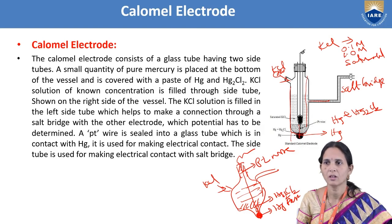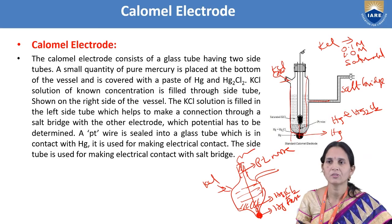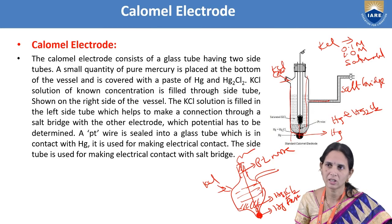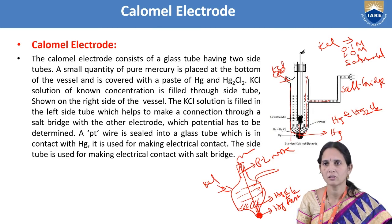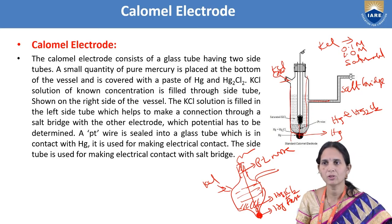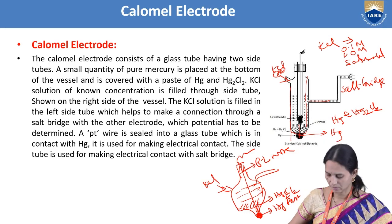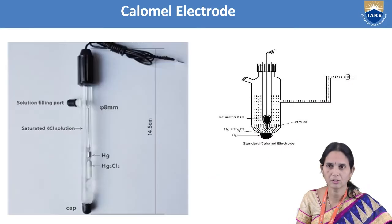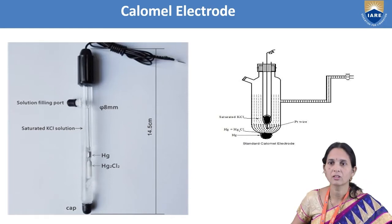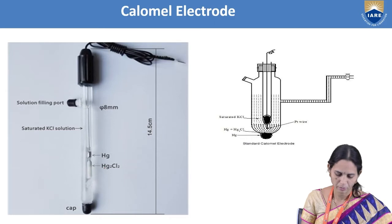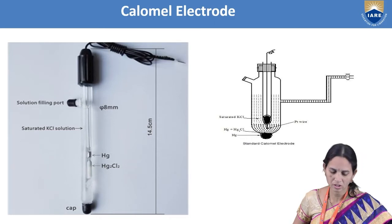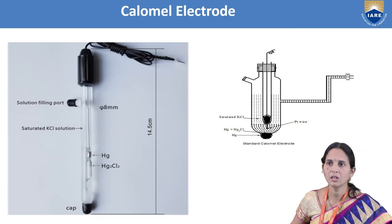To summarize construction: take a long glass tube, place mercury at the bottom, add mercurous chloride paste on top, fill KCl solution, and insert a platinum wire to make electrical contact. In the calomel electrode, we use mercury, mercurous chloride paste, and saturated KCl solution. Once constructed, this electrode can be used to determine the potential of any other electrode.